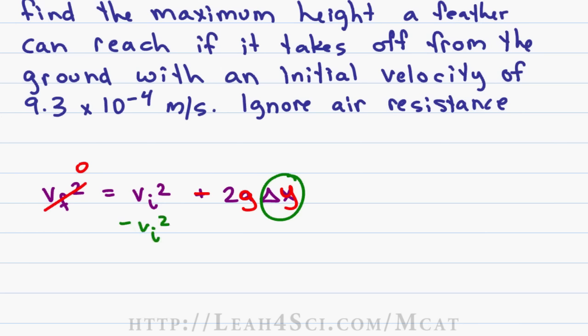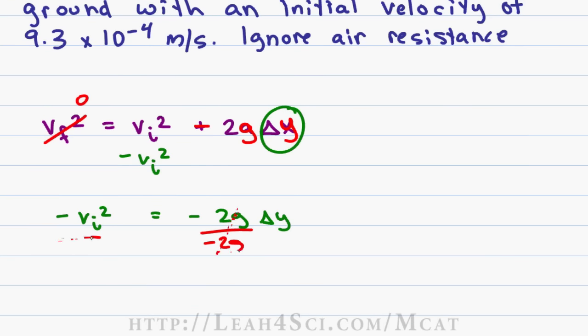Minus v initial squared gives us a new expression: negative v initial squared equals negative 2g delta y. Divide by negative 2g on both sides and cancel out the negatives for a final expression of delta y equals v initial squared over 2g.